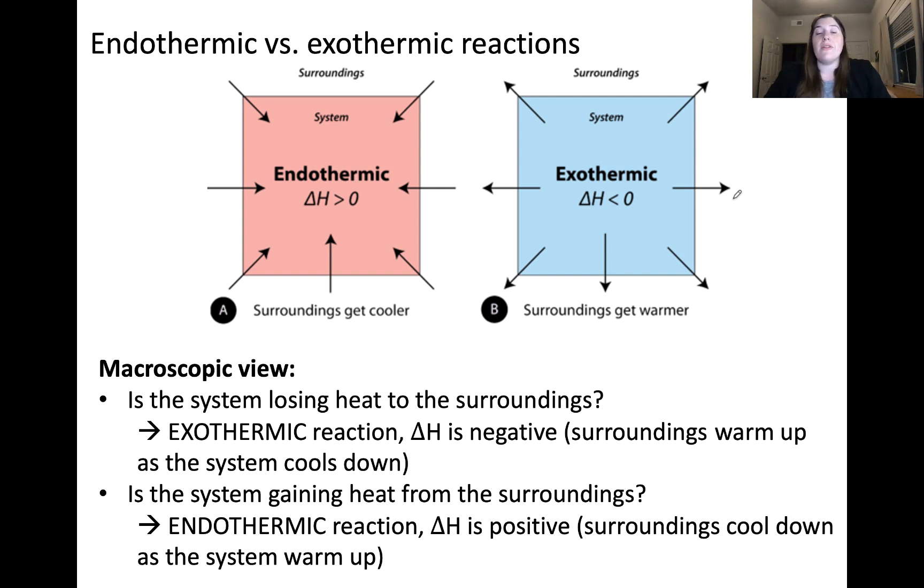Now in the case of an endothermic reaction described with the pink box, that occurs when the system gains heat from the surroundings at constant pressure. Here, delta H has a positive value because the surroundings are cooling down while the system warms up. This is true for the process of acetone interacting with your skin, such as for removing nail polish. When you put the acetone on your skin and the acetone evaporates, your skin feels cold. This is because an endothermic process is occurring.